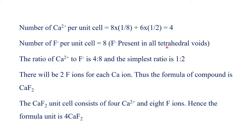Now for the number of fluoride ions per unit cell: fluoride ions are present at all tetrahedral voids, and there are 8 tetrahedral voids in an FCC lattice, so there are 8 fluoride ions per unit cell. The ratio of Ca²⁺ to F⁻ is 4:8, which simplifies to 1:2 — meaning for every one calcium atom there are two fluoride ions. This confirms the formula CaF₂.